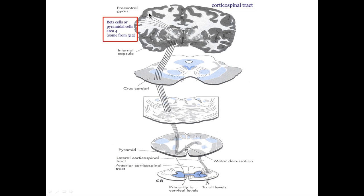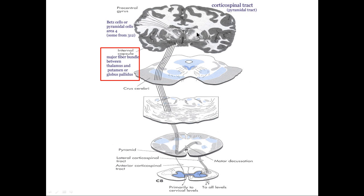Axons come out of the Betz cells or pyramidal cells and travel down through the internal capsule, which is a white fiber bundle that exists between the thalamus and some of the basal ganglia. From there they continue down in the region of the midbrain and take up residence in the cerebral peduncle or crus cerebri. The crus cerebri are essentially the feet of the cerebrum — millions of myelinated axons grouped together.